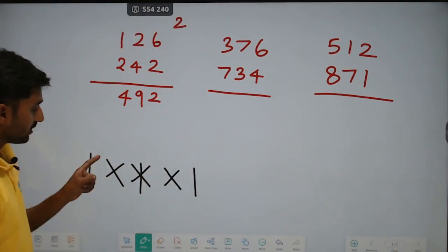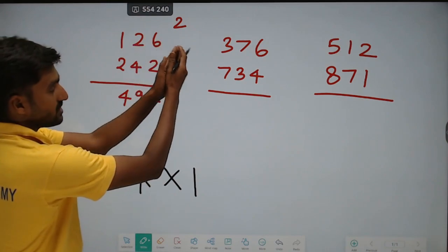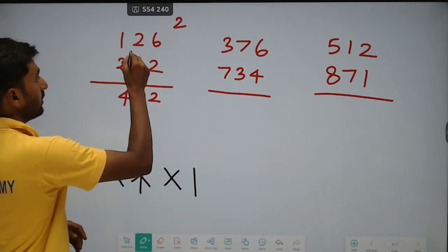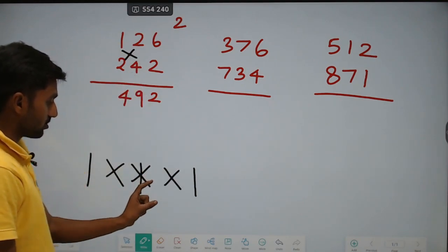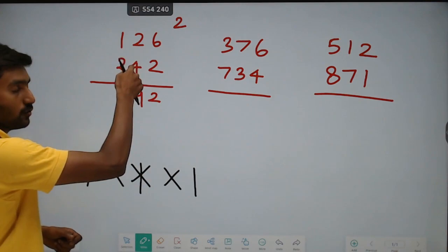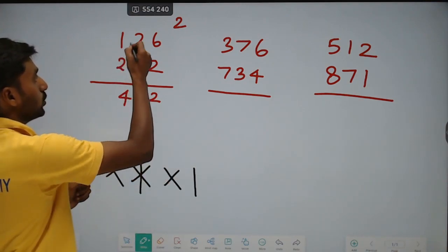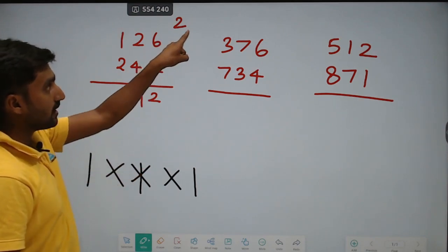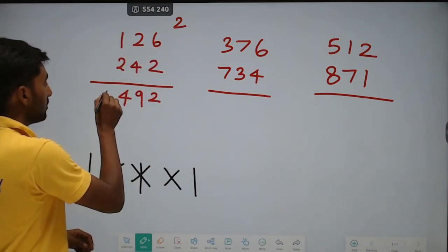Star, then again cross. In the cross, we cross-multiply the remaining digits: 1 into 4 is equal to 4, plus 2 into 2 is equal to 4. So 4 plus 4 is 8. Already carry 2 available, so 8 plus 2 is 10. Write 0, carry 1.